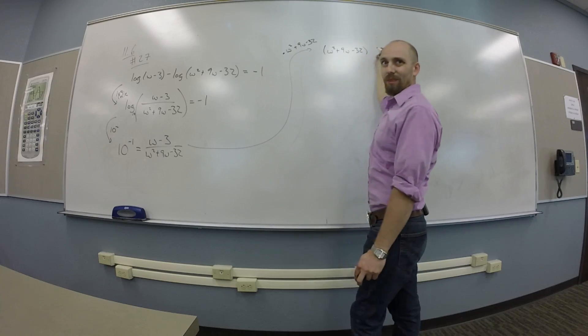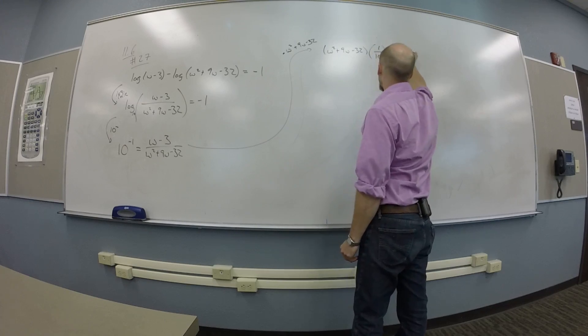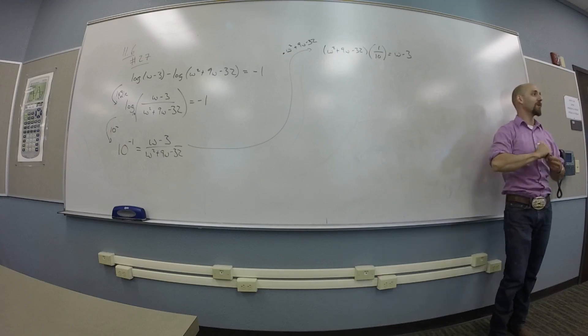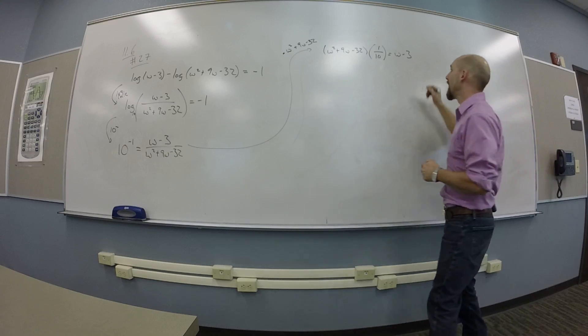Which is a tenth, right? Yeah. And that's W minus 3 on the other side? Okay, now what might I do to make my life even easier? Multiply both sides by 10. I might multiply both sides by 10.